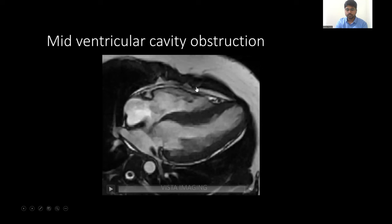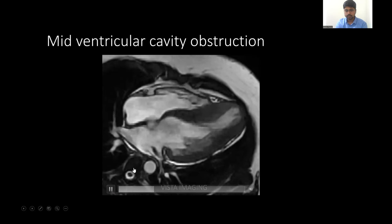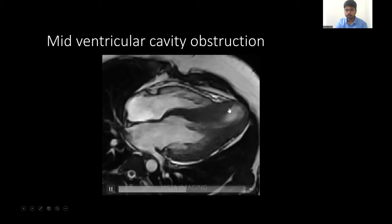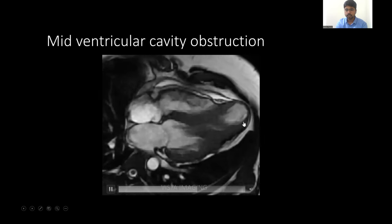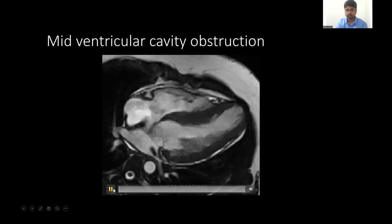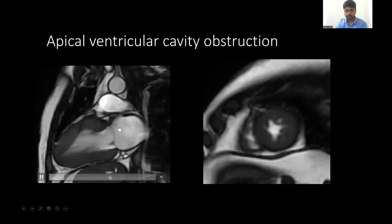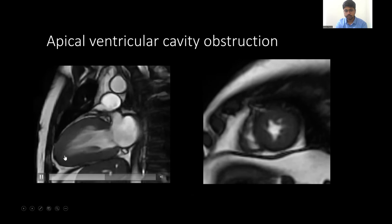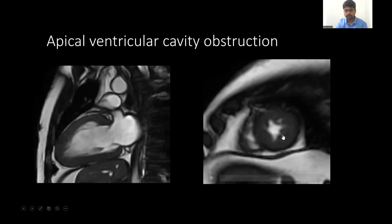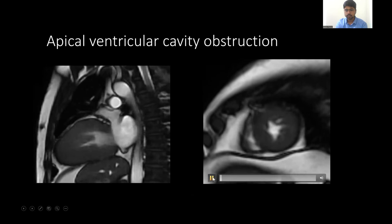In case of midventricular cavity type of HCM, there will be cavity obstruction. Here you can see the mid cavity is obstructed and there is a turbulent jet, and there is also a resultant apical ballooning. In case of apical HCM, the apical cavity gets obliterated. Here in this case, a two-chamber view is showing obliteration of the apical cavity. This is the short axis view at the apical level showing cavity obliteration.